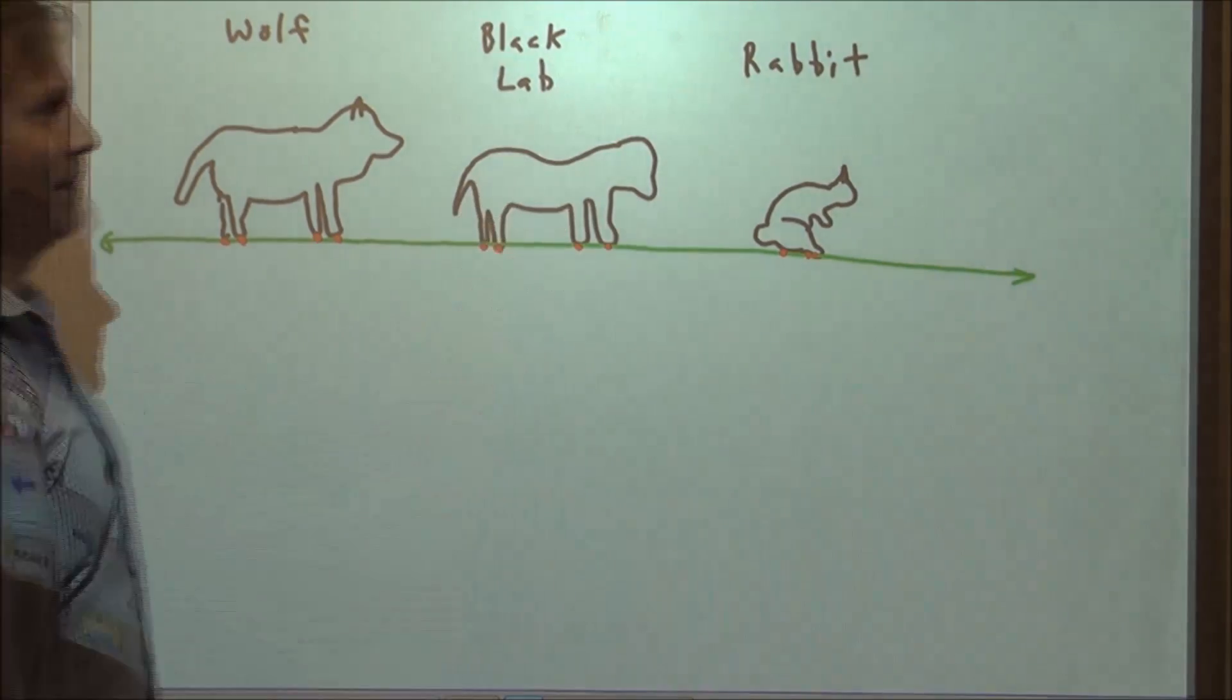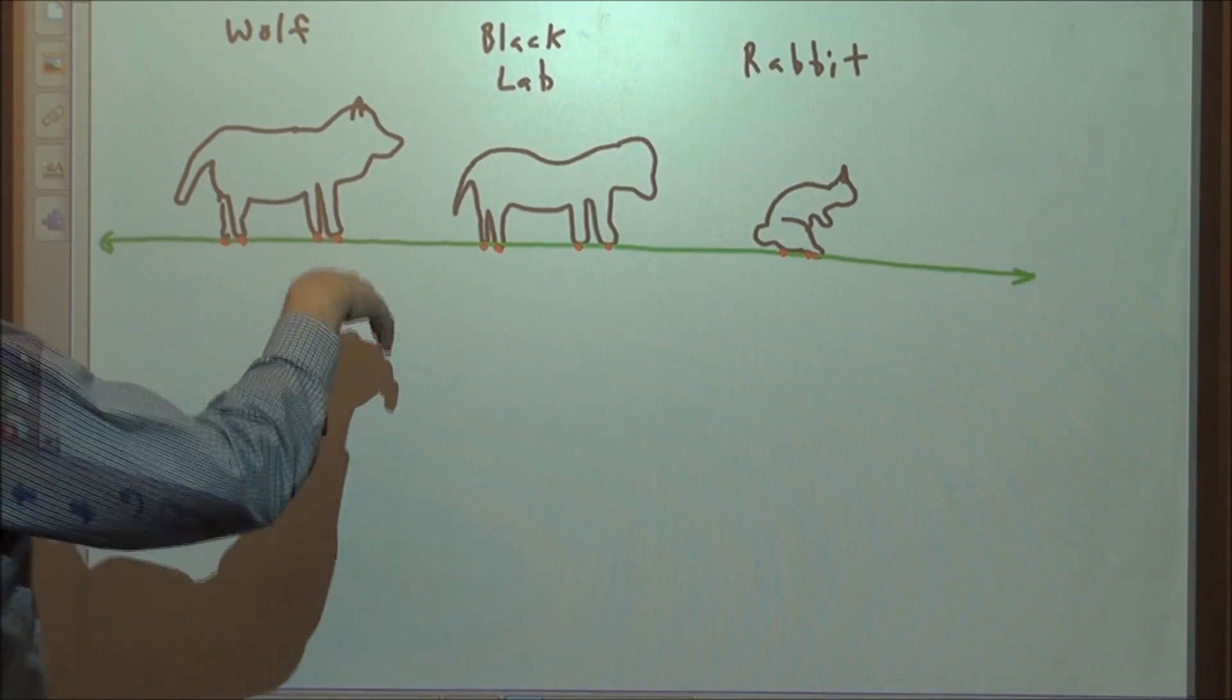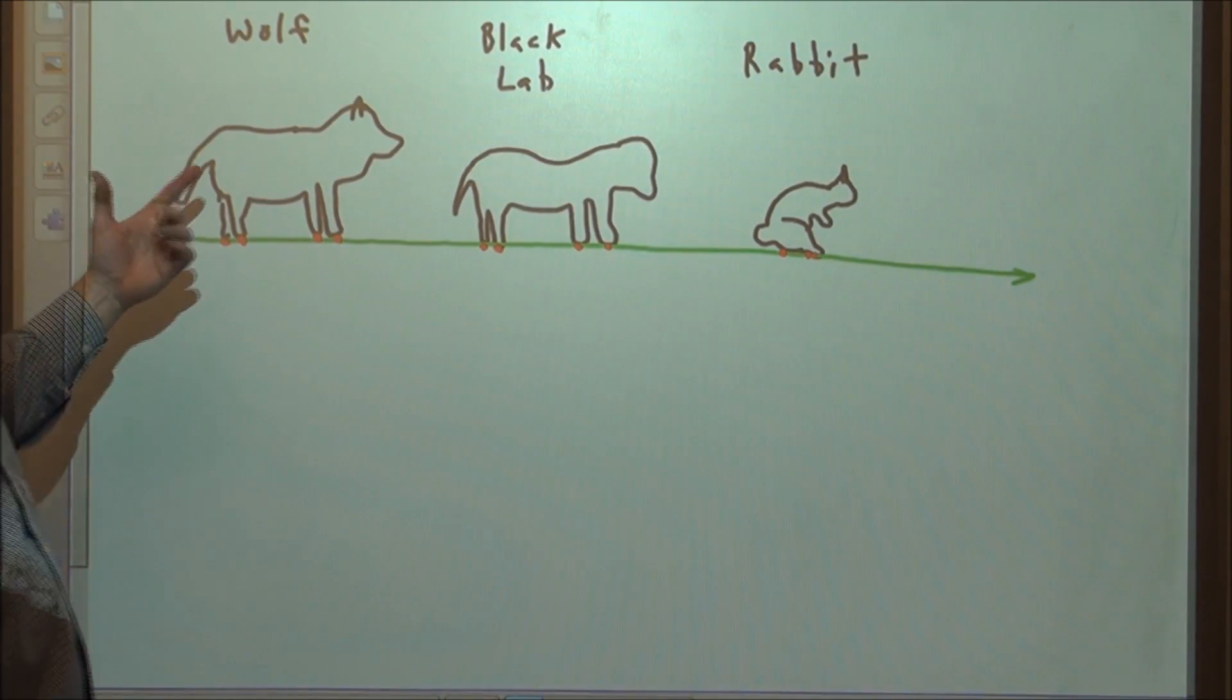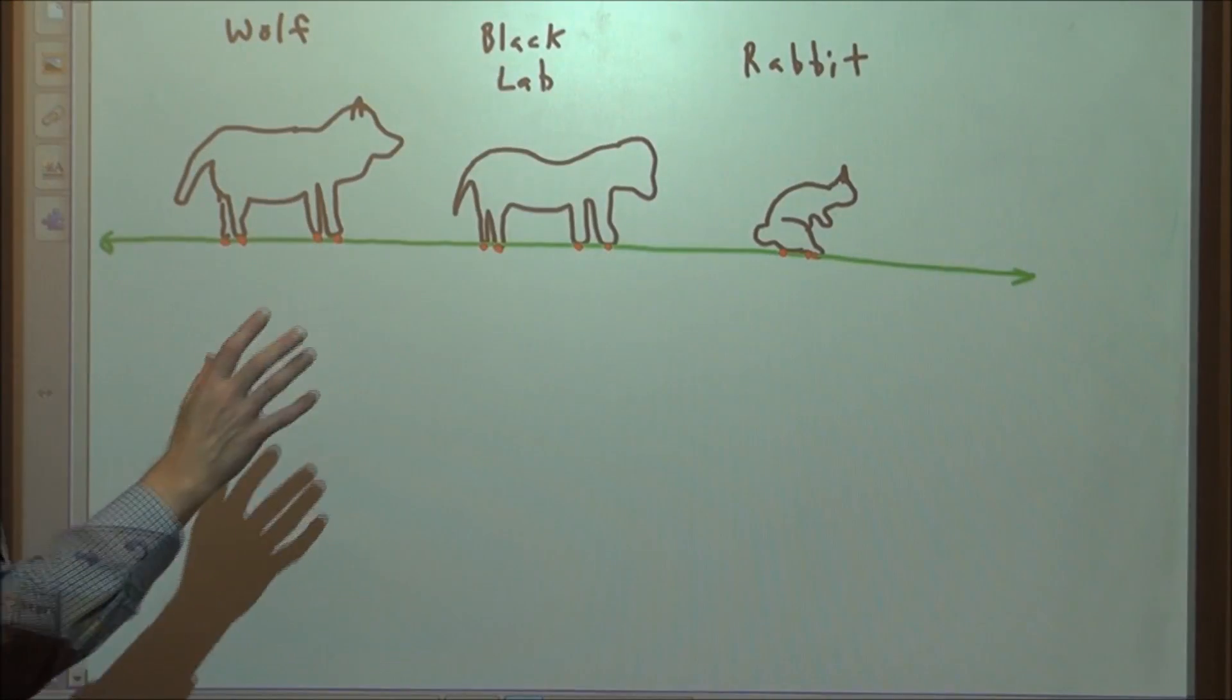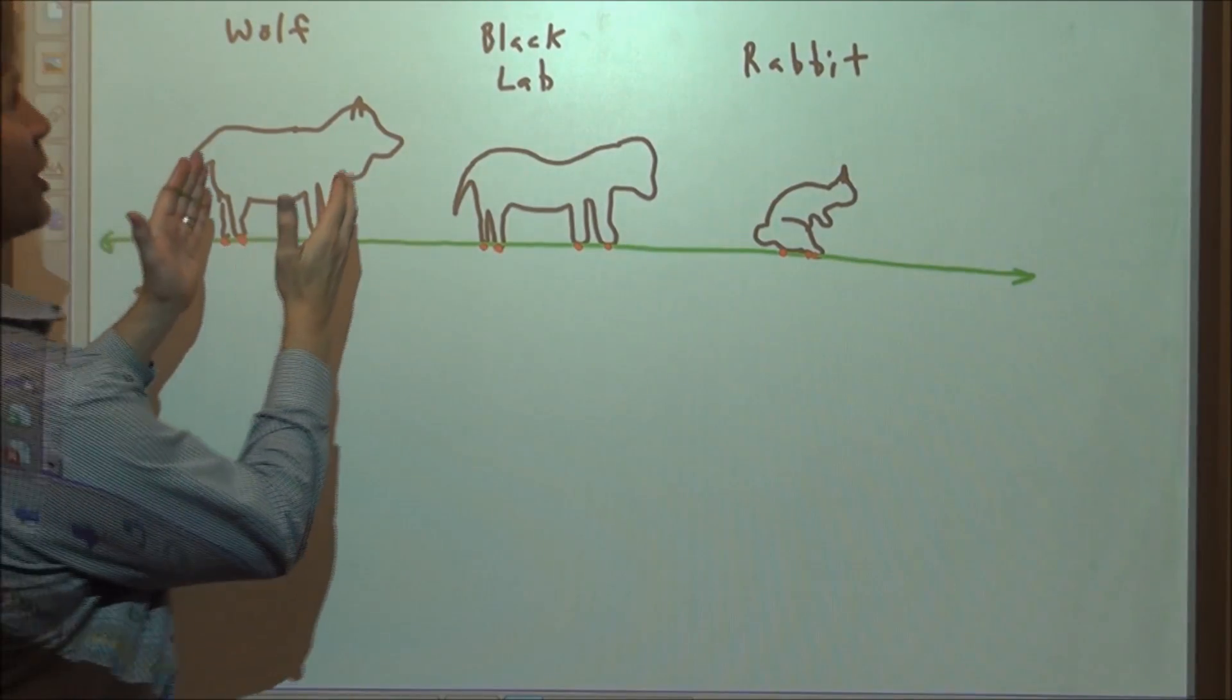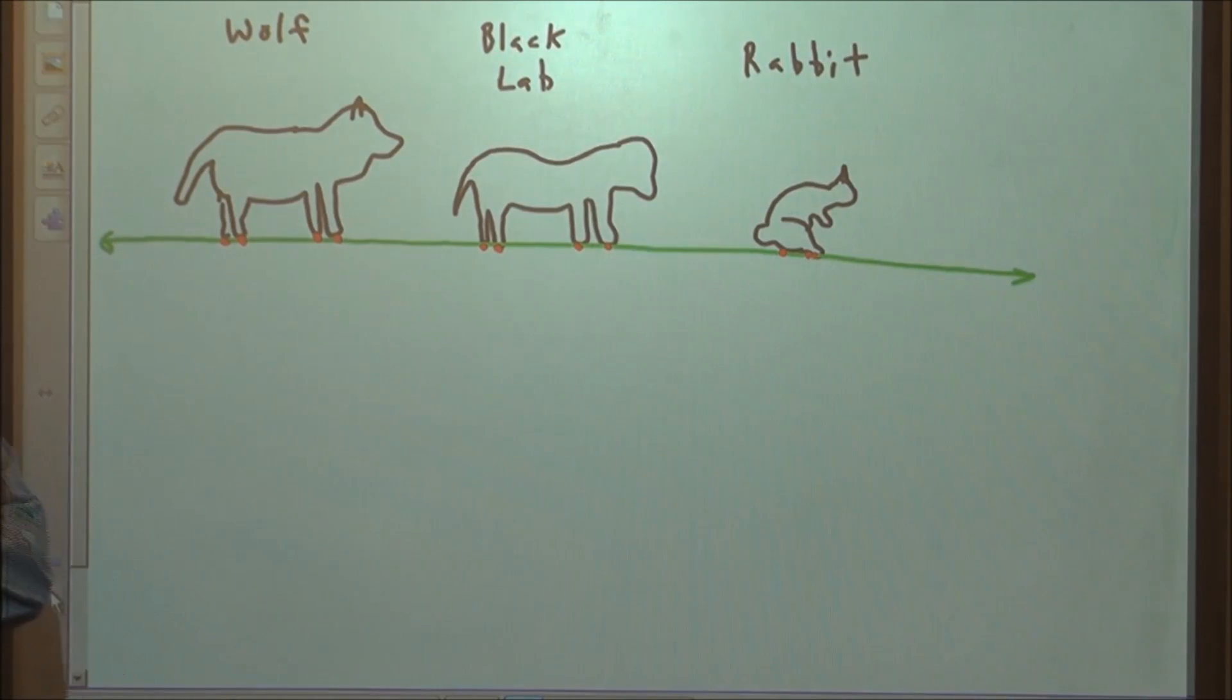Here's an example. I want you to look at these three animals. Initially I was trying to draw a horse and a donkey and then the Eiffel Tower. Didn't work out so well, but looks like a wolf, a black lab and a rabbit. Take 20 seconds and think, how would you compare and contrast those three animals and how would you share that with other people?